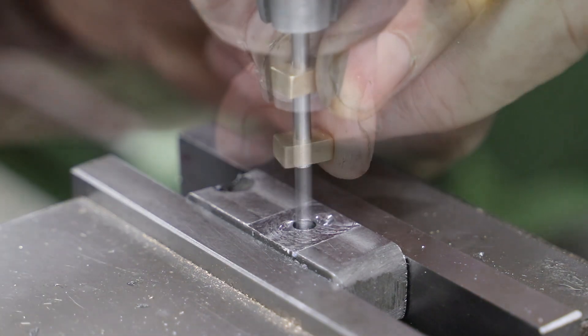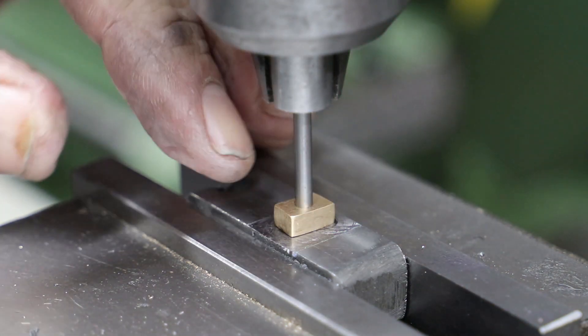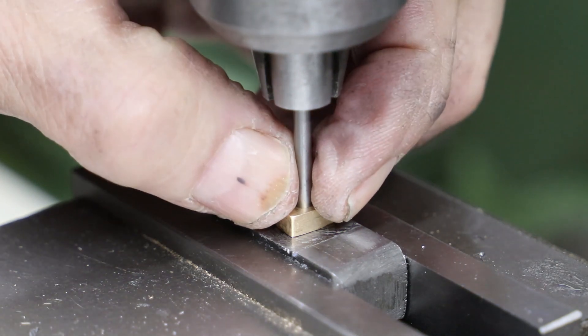To position a die block so that the hole is directly below the centre of the quill, I use a bit of 1.8 silver steel bar held in the chuck.